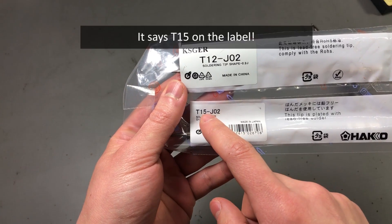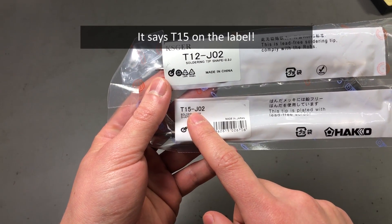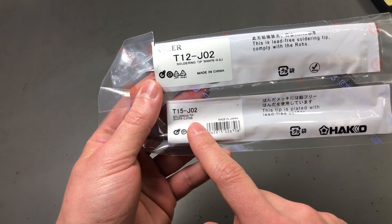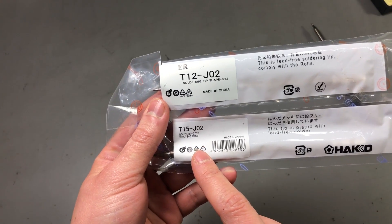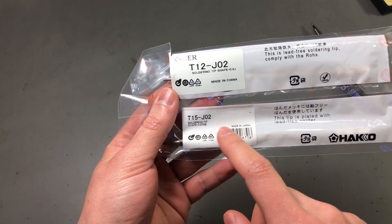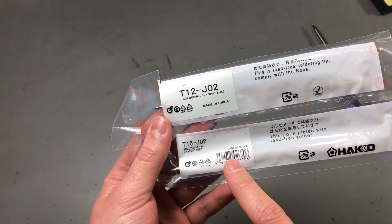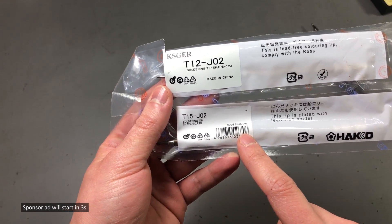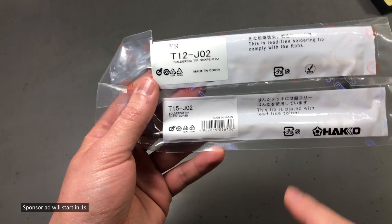As you might notice it says T12 right here but don't worry, there is no difference between T12 and T15 tips except they use a different numbering scheme depending on the market where they sell it. So it's T15 for the EU and US markets and T12 for Asia as far as I know.